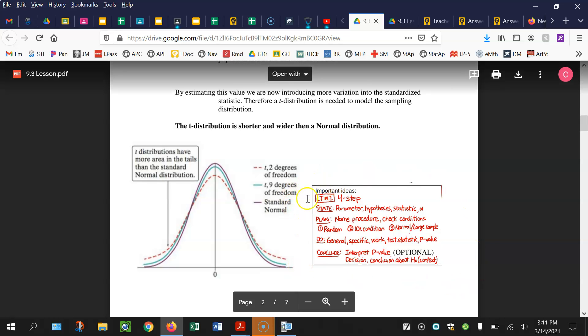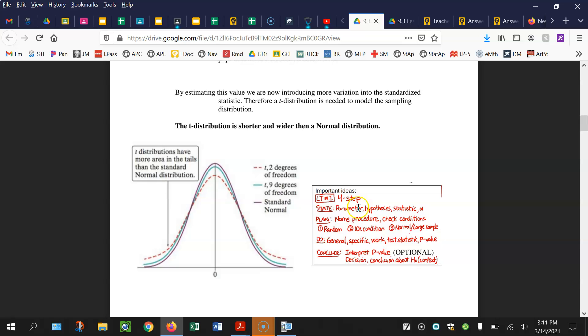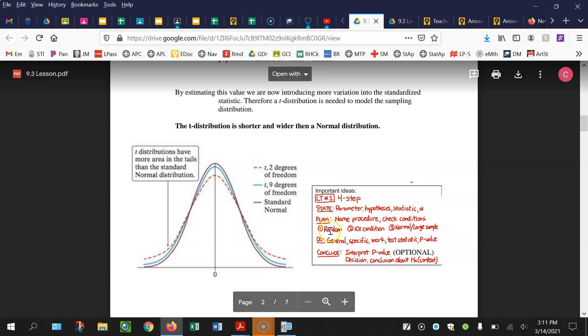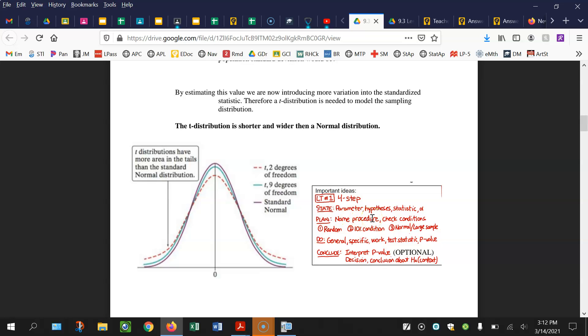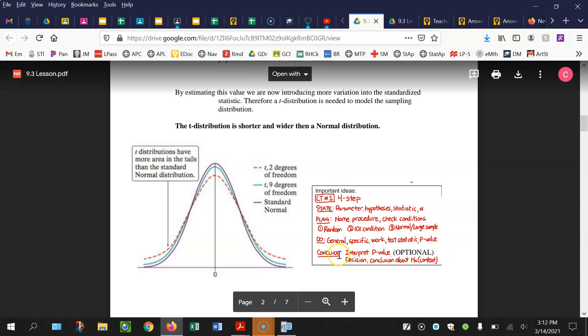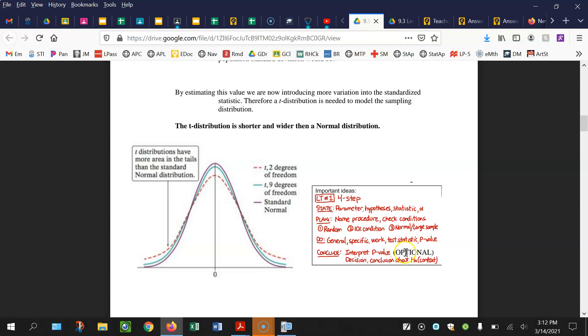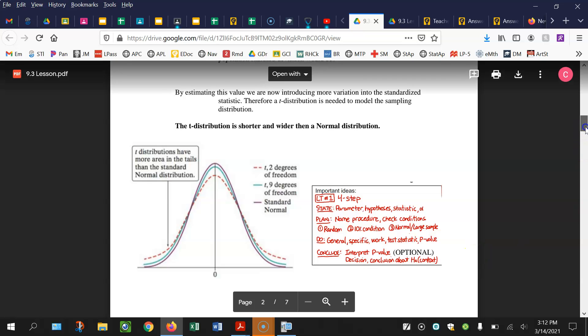Four-step process we're going to continue to use. For the state: list the parameters, symbol and words, hypotheses, and your significance level. For the plan step, you're checking the random 10% and the normal or large sample condition, and then you have to name the procedure including your degrees of freedom. For the do step, get your test statistic and p-value, and then conclude. You can interpret your p-value, that's optional. I actually suggest that you don't on the AP exam. Then we've got our three parts: compare your p-value to your significance level, make a decision, and then your context as far as evidence for the alternative.